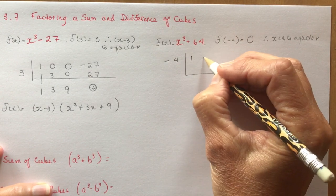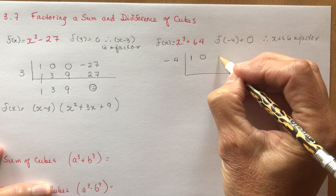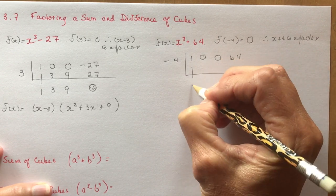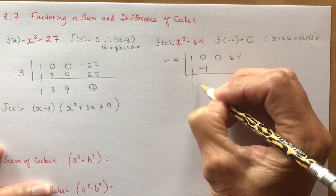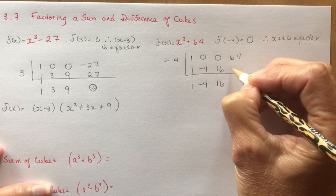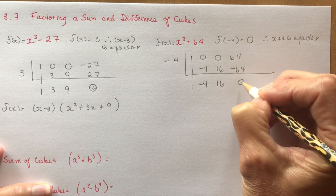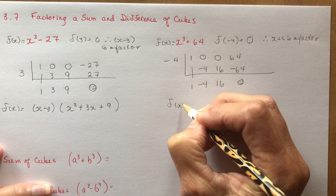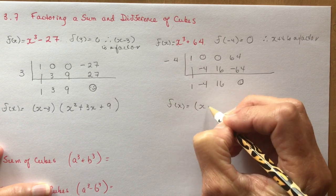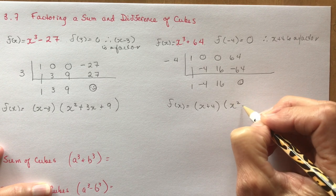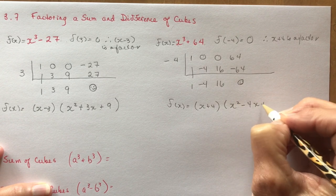So this time I have 1. I have 0x squareds, I have 0xs, and I have 64 for a constant. So I bring down the 1. I add it up. Add it up. And I get my 0. So that means f at x for this question would be x plus 4 times x squared minus 4x plus 16.